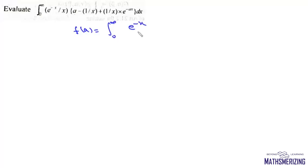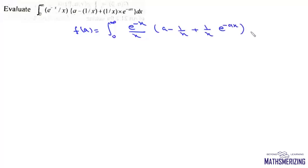The question is we need to solve this integral in which the parameter is a. So we'll write F(a) equals this integral from zero to infinite of a to the power minus x upon x, then a minus one upon x plus one upon x, into a to the power minus ax, dx.